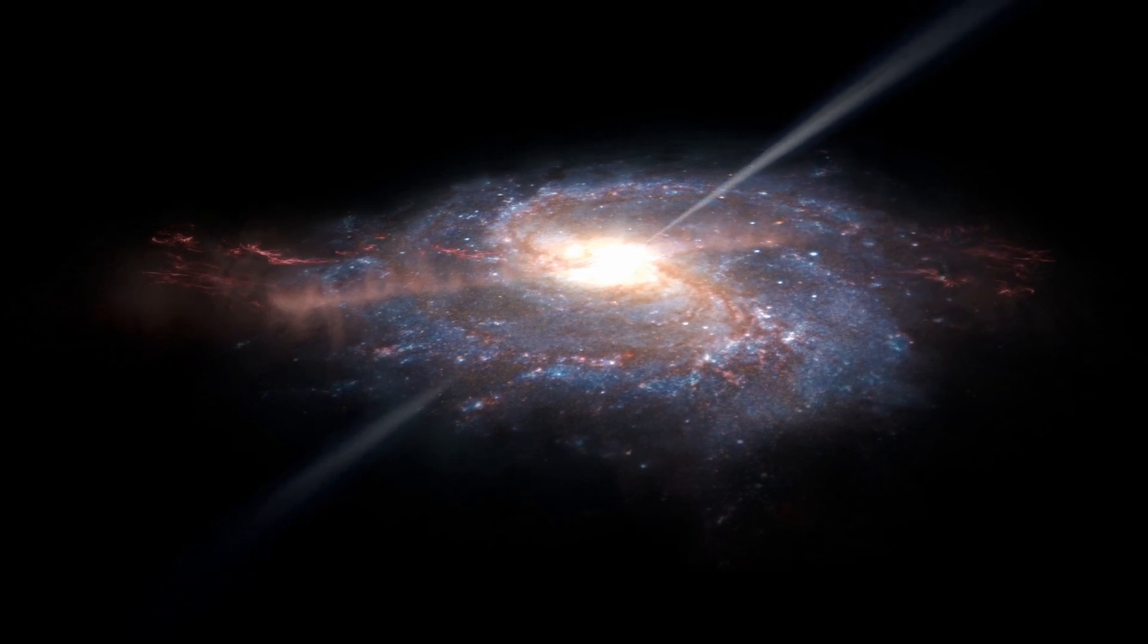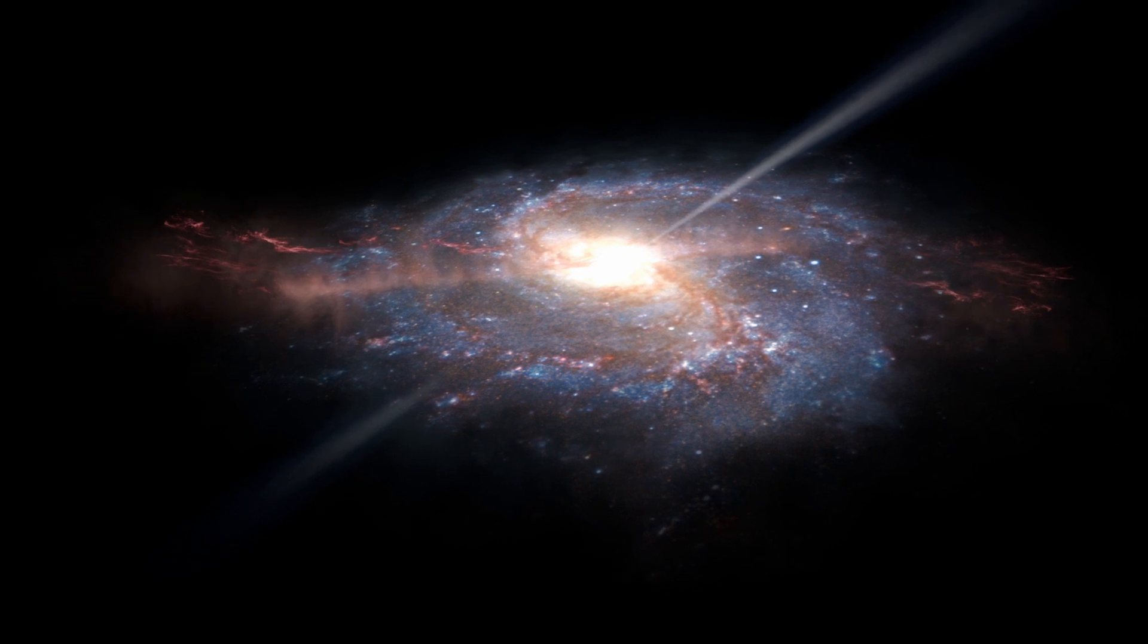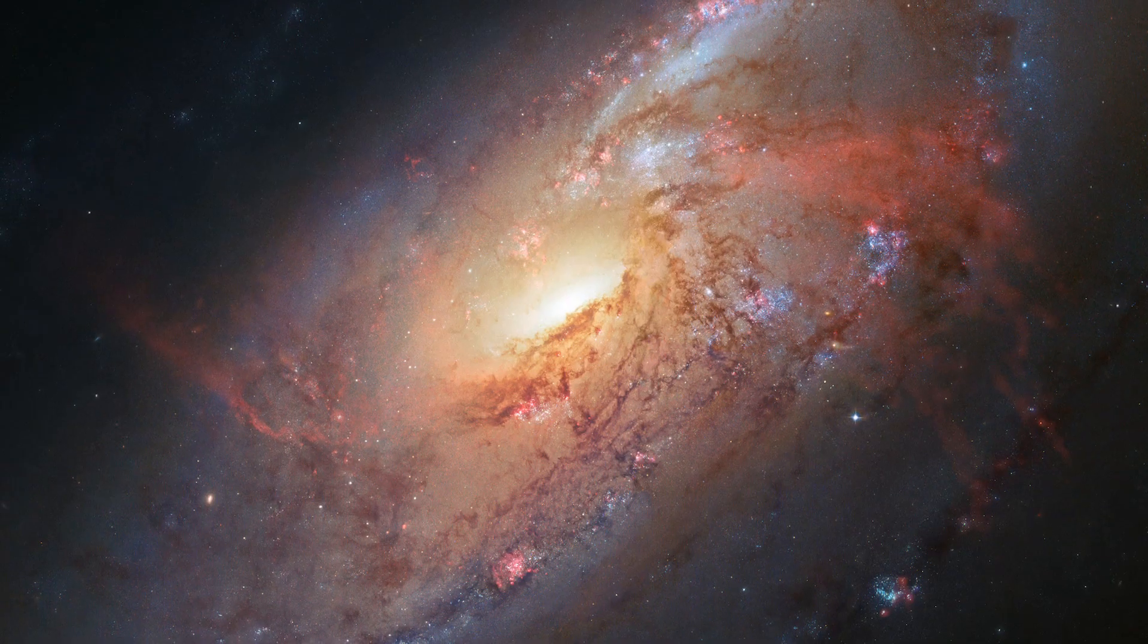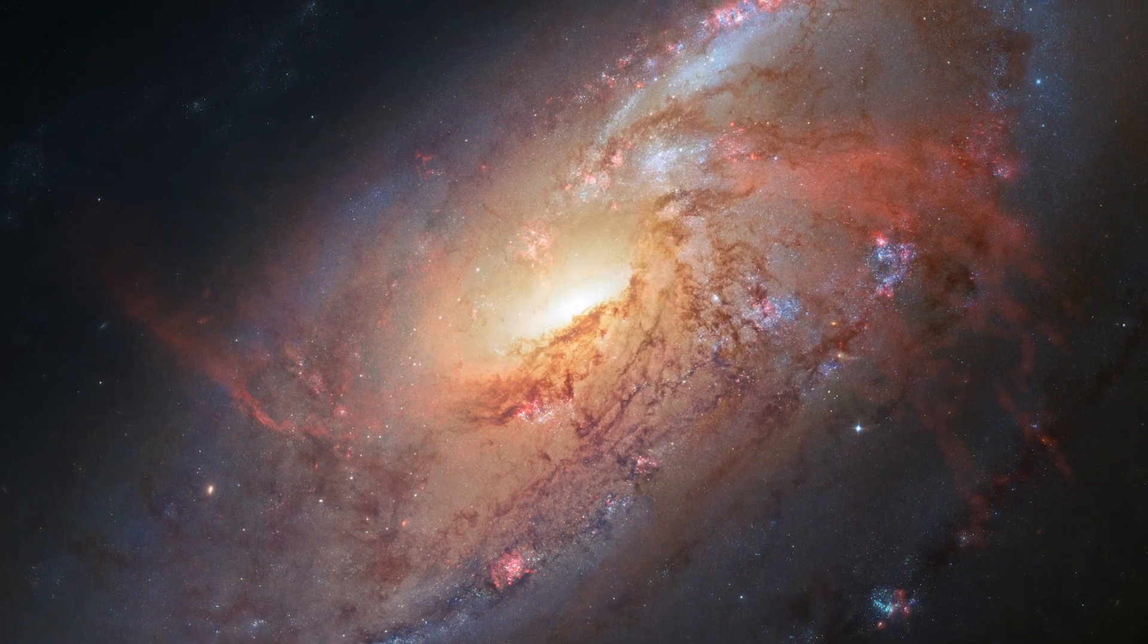However, the looser gas further out is blown away from the jets, so that it curves out of the galactic plane, creating the arching red arms seen in this image.